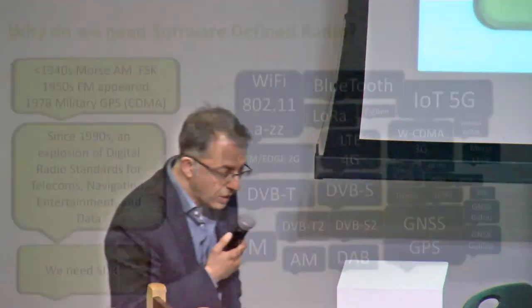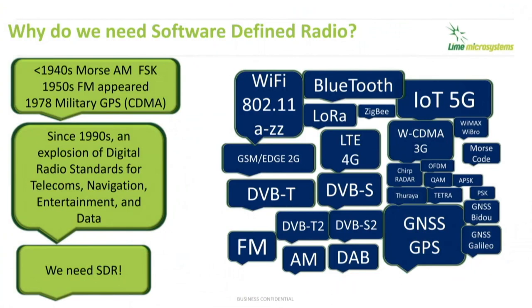We are going to be soon launching another campaign with CrowdSupply, which I'll highlight at the end of my presentation. When you look at the type of air interfaces and wireless connectivities out there, there are really numerous air interfaces that we cater for today. If you look at cellular just as an example, we've gone from 2G to 3G, from 3G to 4G, and now we are talking about 5G. My company is already working on 6G technology.